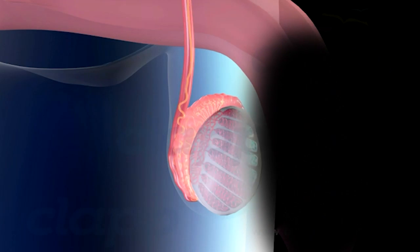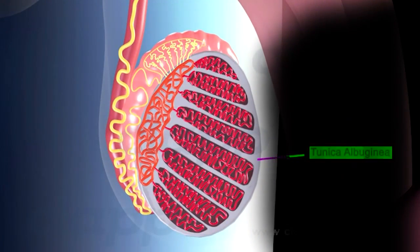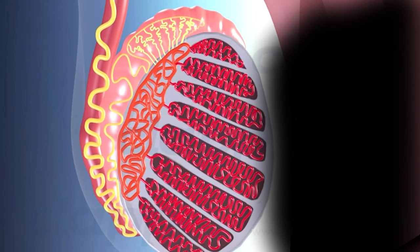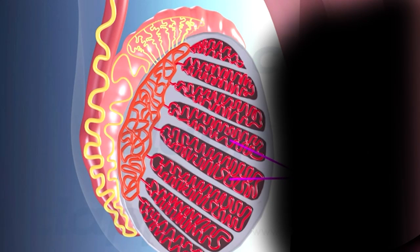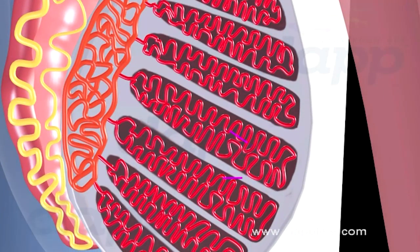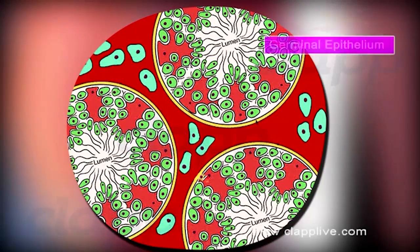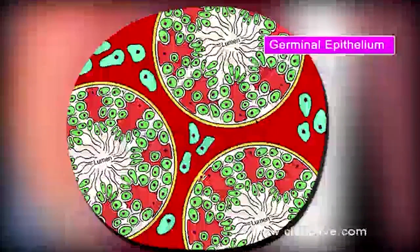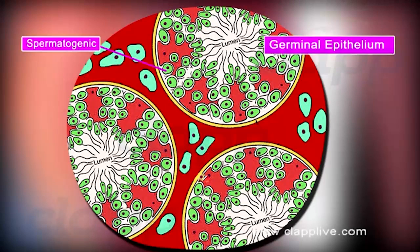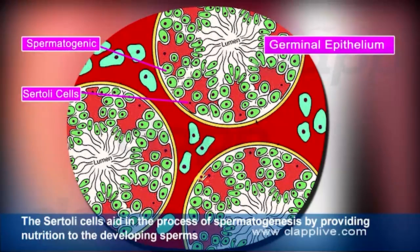The testis is enclosed in a dense fibrous coat called the tunica albuginea, inward growth of which divides the testis into around 200 to 300 lobules called testicular lobules. Each lobule consists of 1 to 3 highly coiled seminiferous tubules. These tubules are lined inside by germinal epithelium, which consists of two types of cells: cuboidal cells called spermatogonia and pyramidal cells called Sertoli cells or nurse cells.